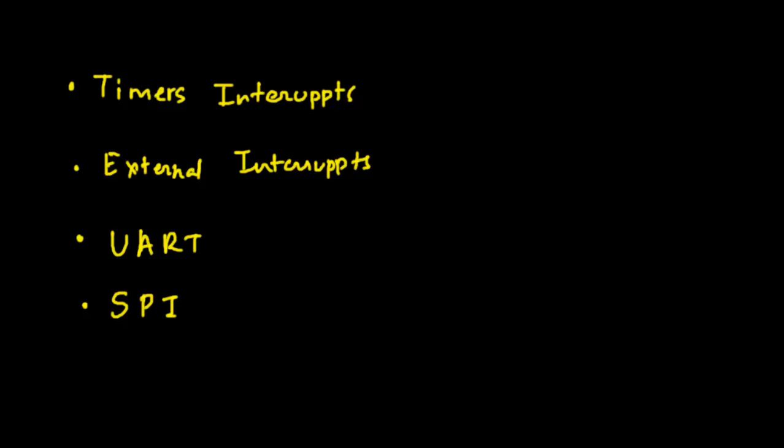The next set of devices that create interrupts — and again these are internal — includes the ADC, the analog-to-digital converter, which is internal to the controller. So it's clear that all these devices need interrupts because the CPU can do its own computation and all these devices can request the CPU's attention.